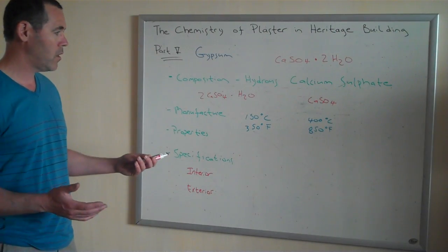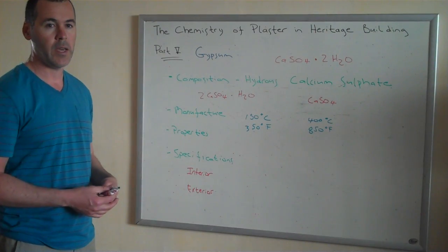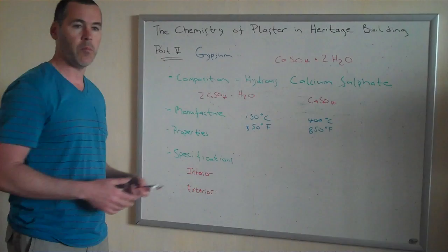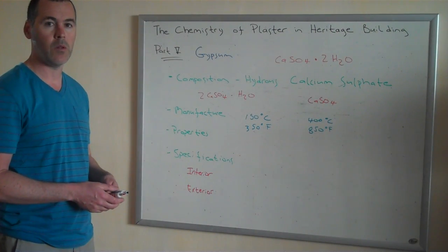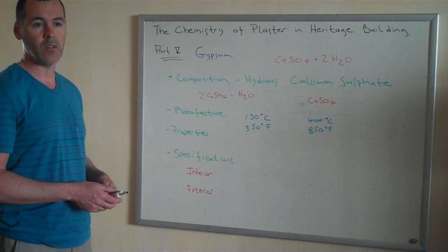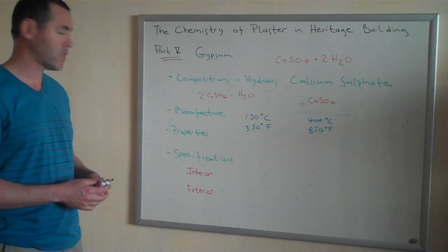Also, it has a very quick set, at least the hemihydrate form. And for molding plaster, that's terrific as well because you can pour the gypsum plaster in a wet state, slurry into a mold. And typically within anywhere from 20 minutes to 45 minutes, you can take it out of the mold and go on to the next casting.